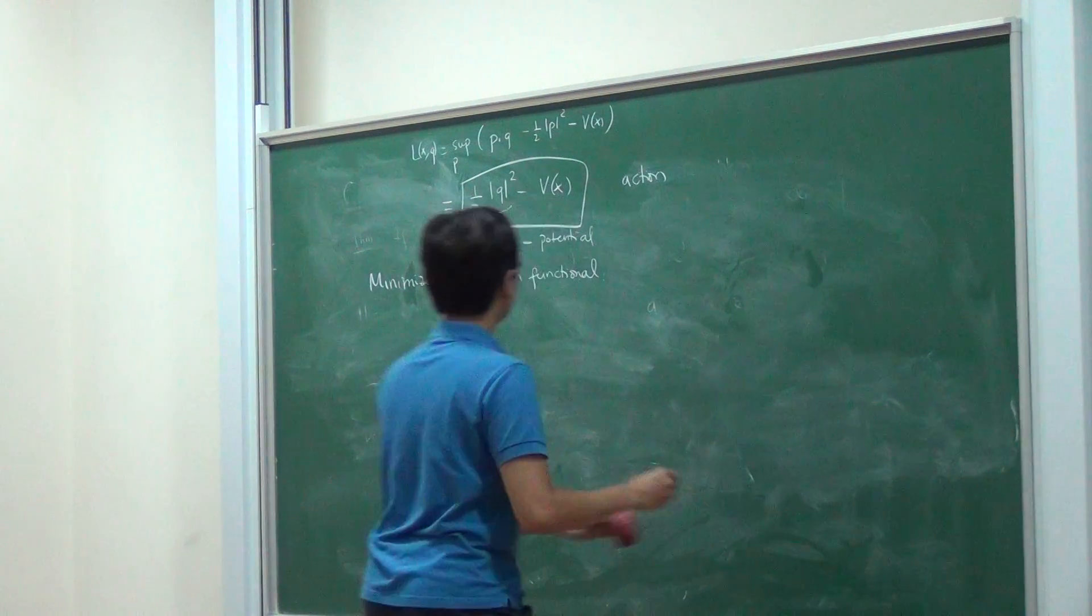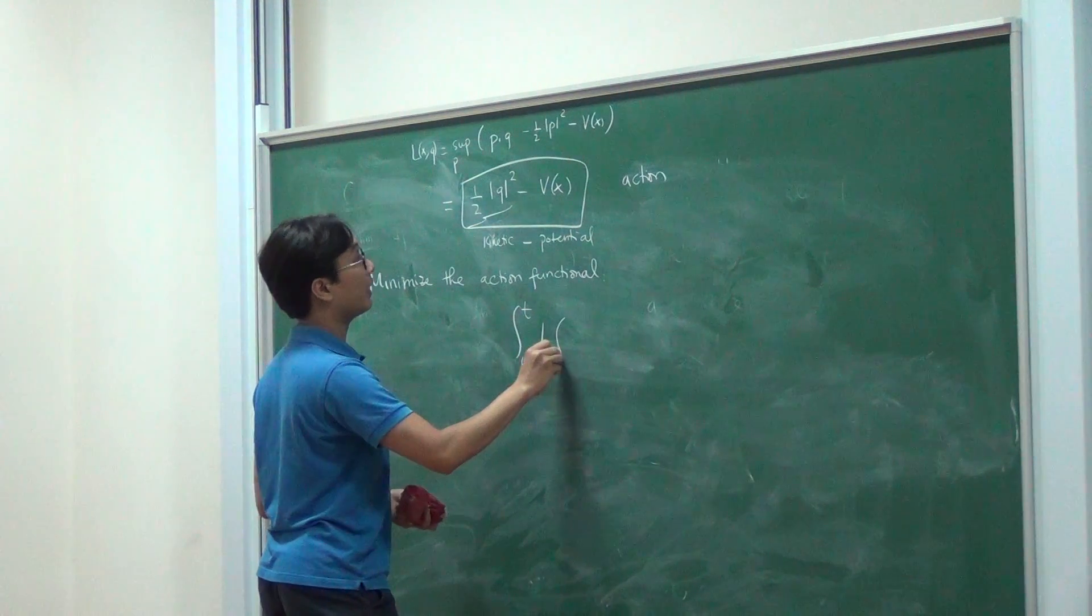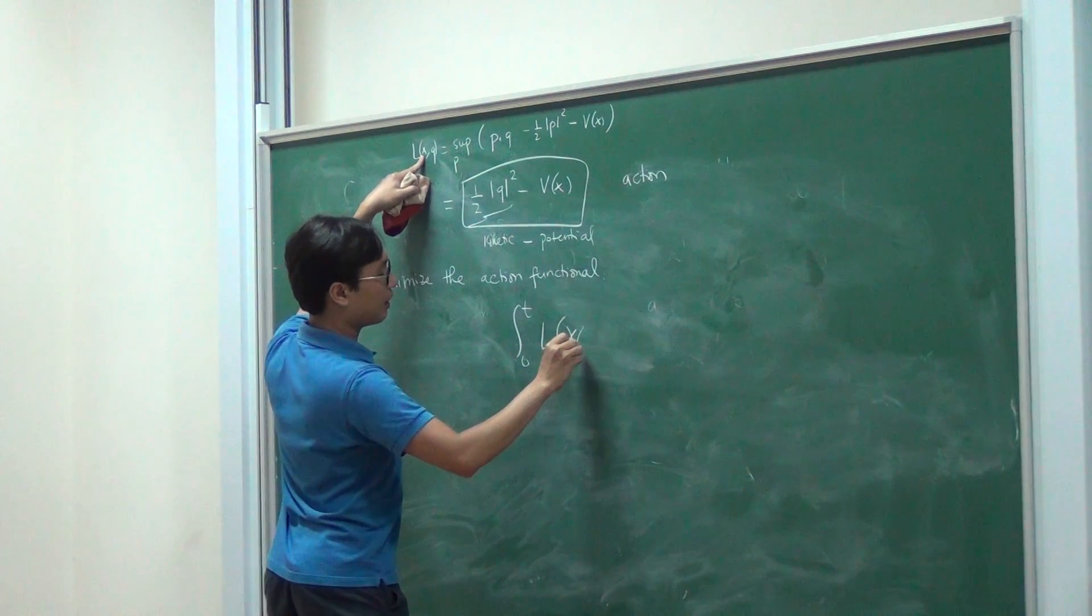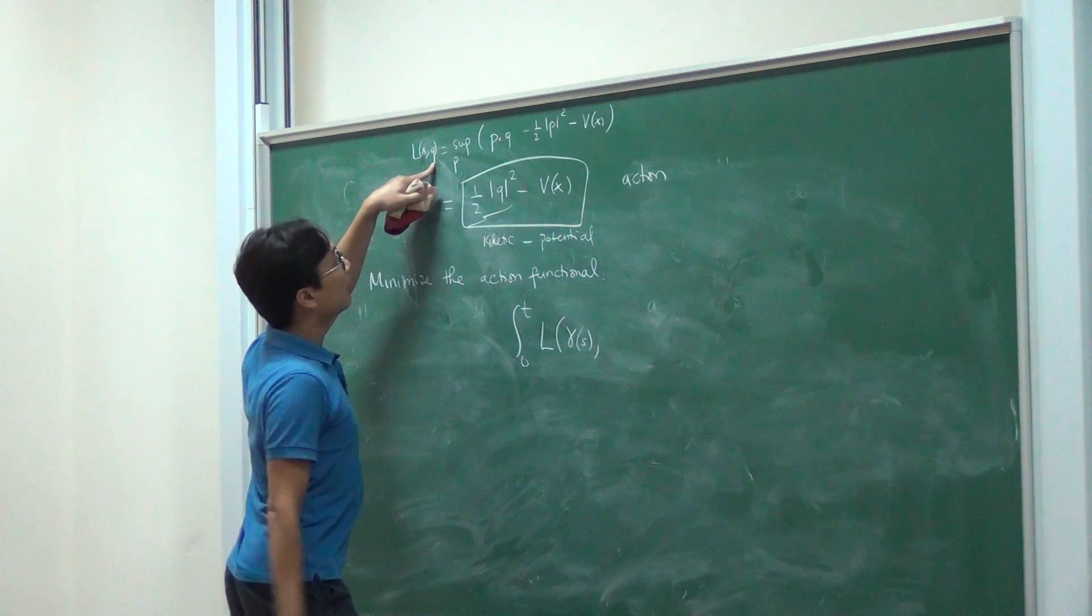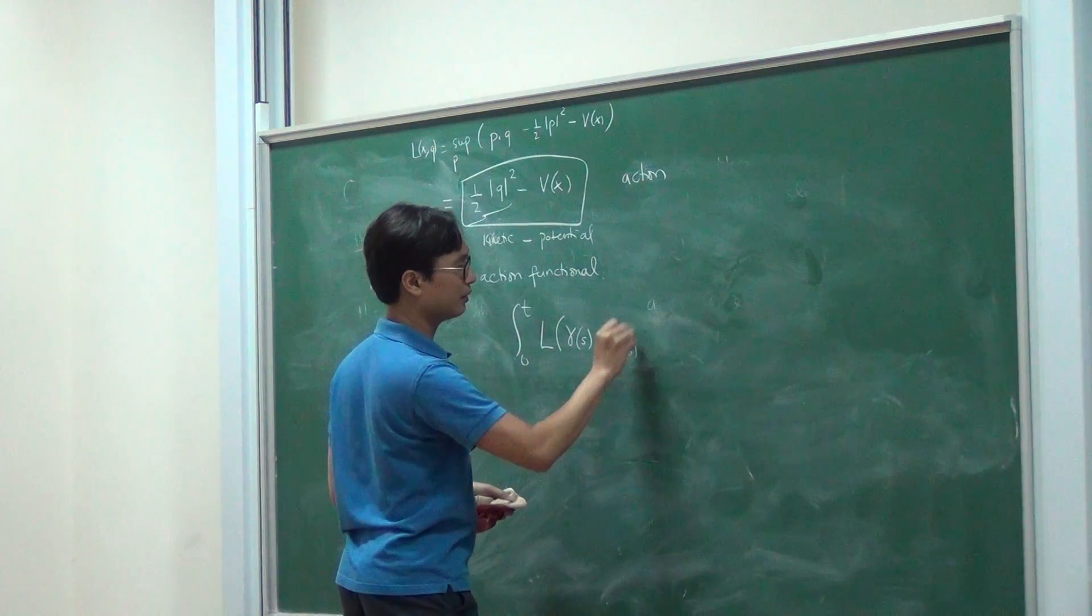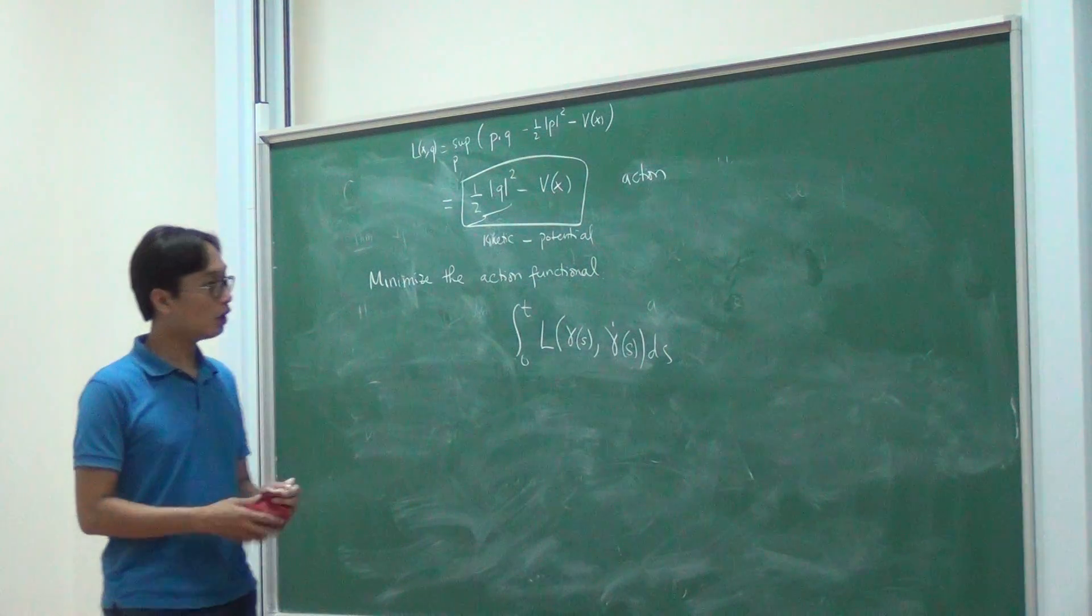So it's going to be something. Minimize the integral from 0 to t. The action function now acting on. So x is the position, now my s, and q, I think it's a velocity, now my prime of s to s. This is, we're going to minimize the action function.